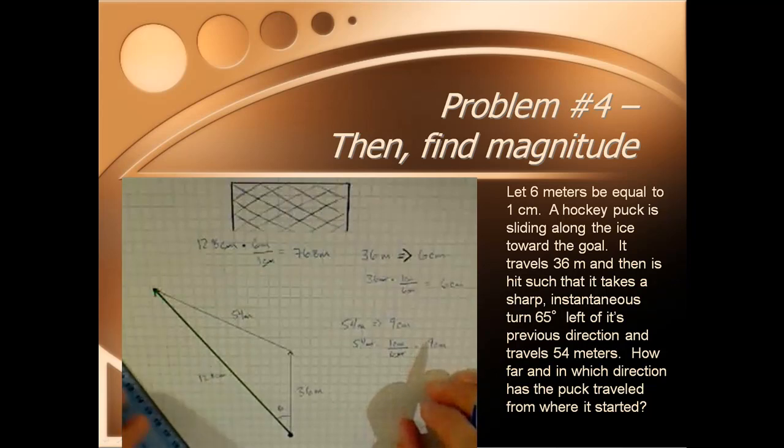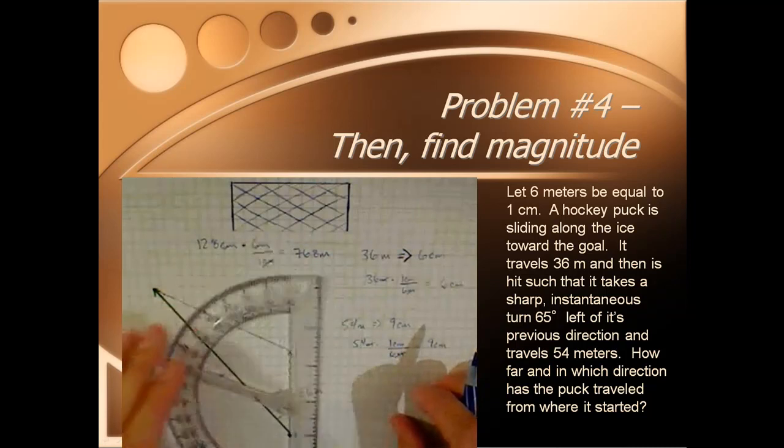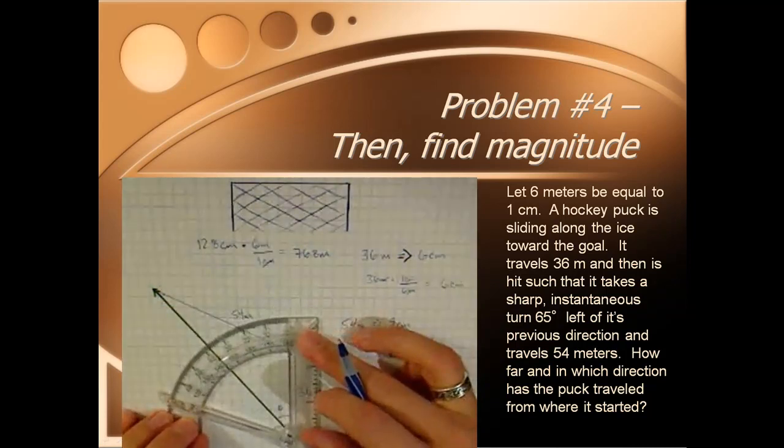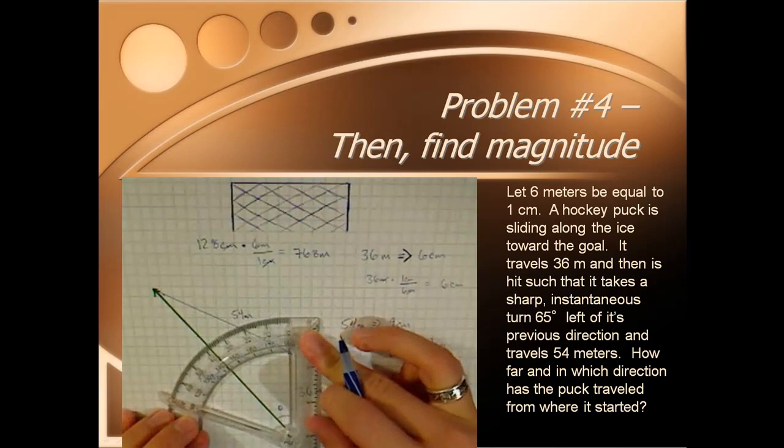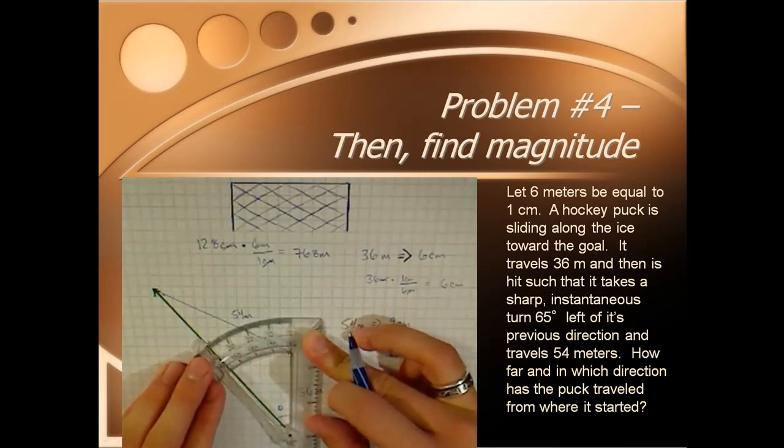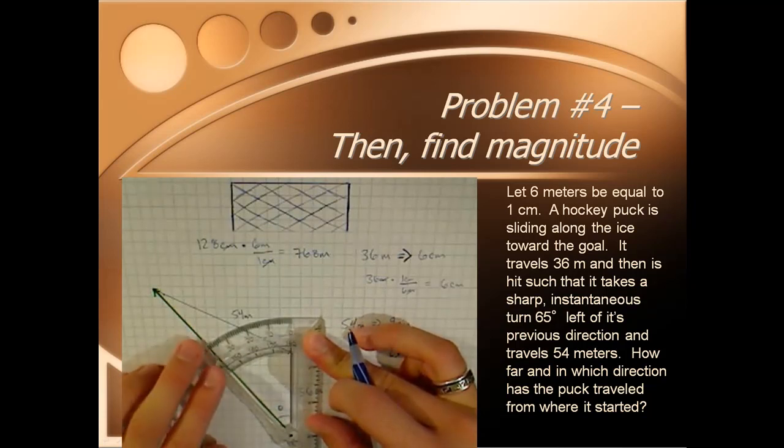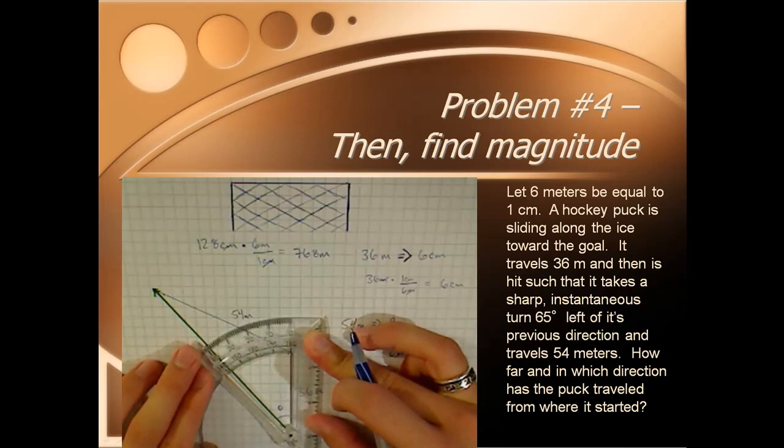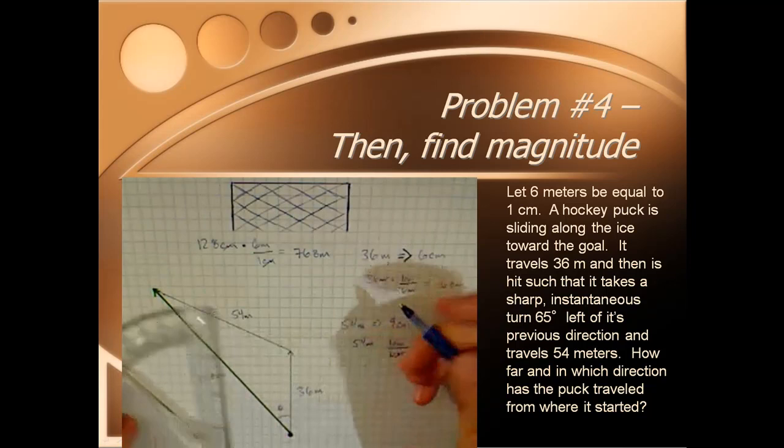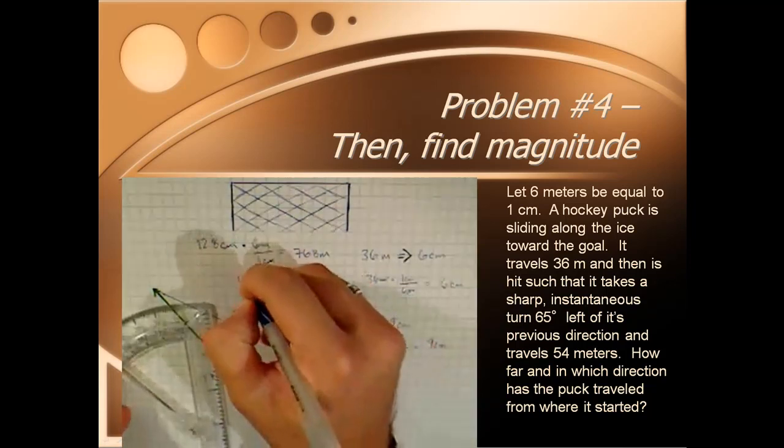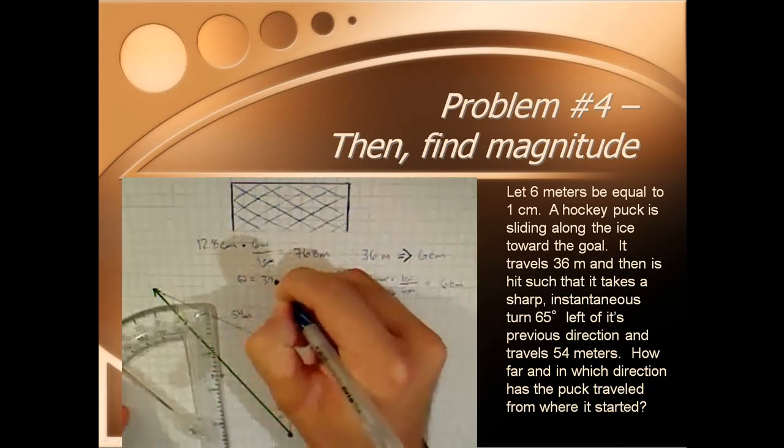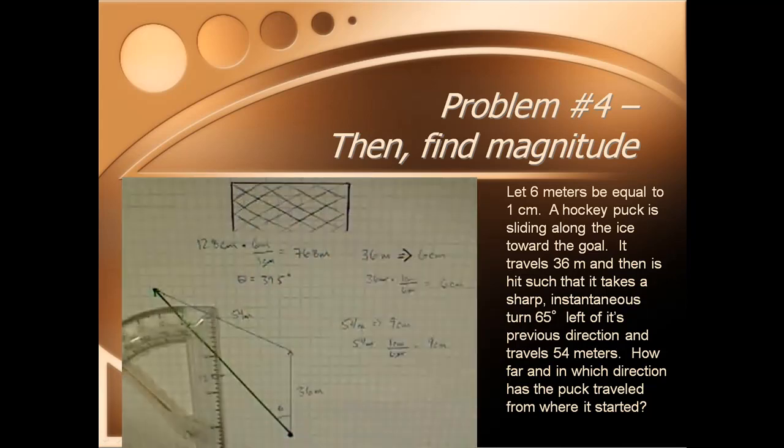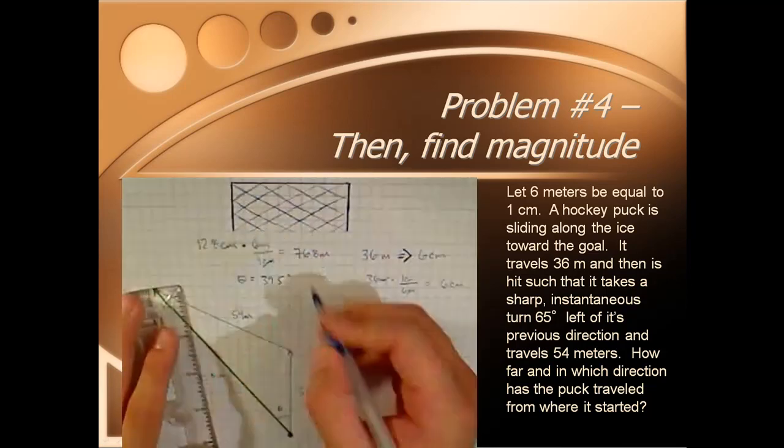Our resulting displacement is 76.8 meters at an angle. Again, I'm going to line these sides up with the point right there. I'm going to get an angle of just about 39.5. So, theta is going to equal 39.5 degrees. This will be my answer.